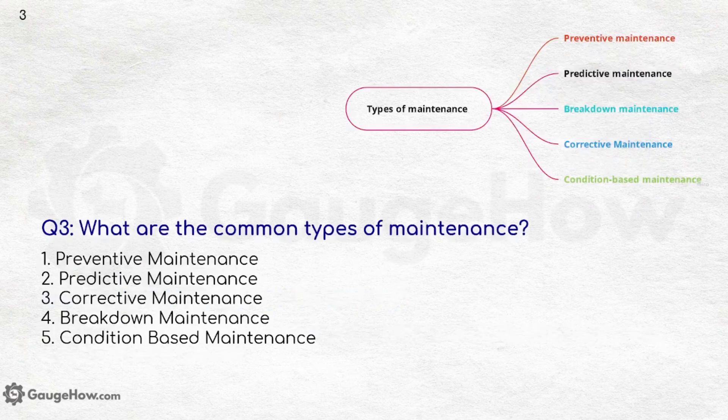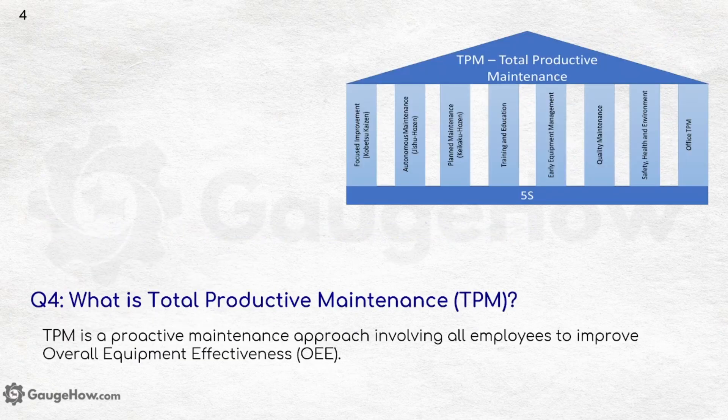What are the common types of maintenance? Preventive maintenance, predictive maintenance, corrective maintenance, breakdown maintenance, and condition-based maintenance. What is total productive maintenance? TPM is a proactive maintenance approach involving all employees to improve overall equipment effectiveness.